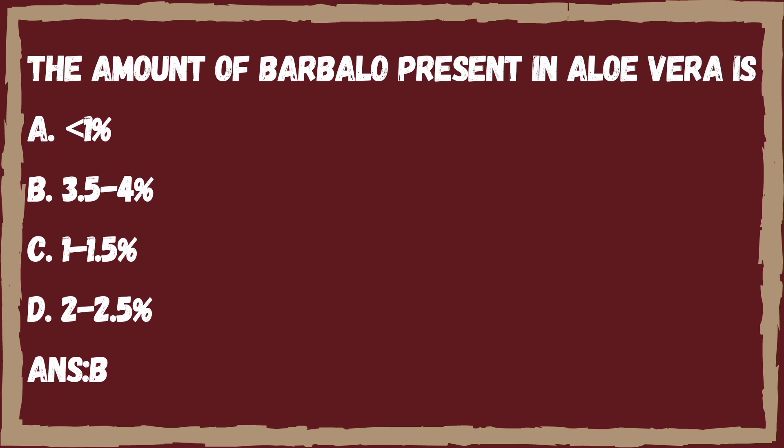Barbaloin, also known as aloin, is a C-glycoside and is the major active constituent of aloe vera.